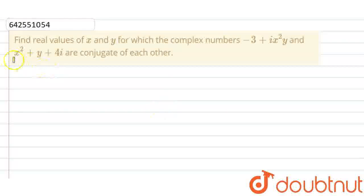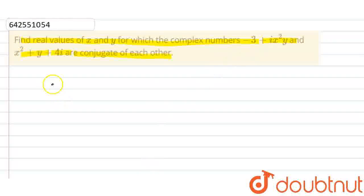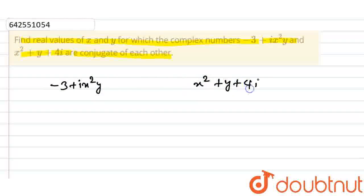Hello friends. In this question, we have to find the real values of x and y for which the complex numbers minus 3 plus i times x squared times y, and x squared plus y plus 4i, are conjugate of each other.